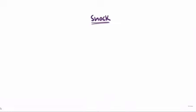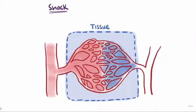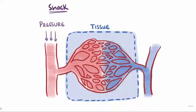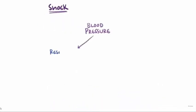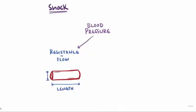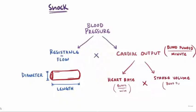With shock, the body's tissues aren't getting enough oxygen via the blood. Normally, blood perfuses through tissue and delivers oxygen because there is enough pressure in the circulatory system to push it through. Blood pressure is a major determinant for the amount of blood perfusing through tissues. Blood pressure is determined by two components: the resistance to blood flow in the blood vessels — including vessel length, blood viscosity, and vessel diameter — and cardiac output, which is the volume of blood pumped by the heart per minute. Cardiac output can be broken into heart rate times stroke volume.